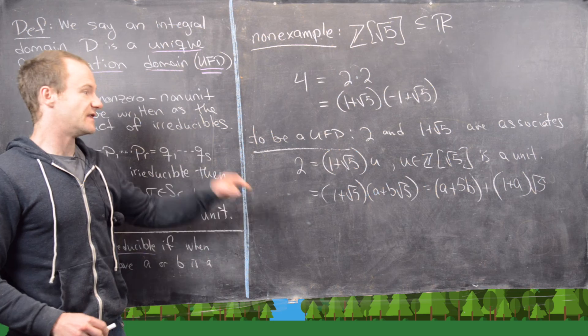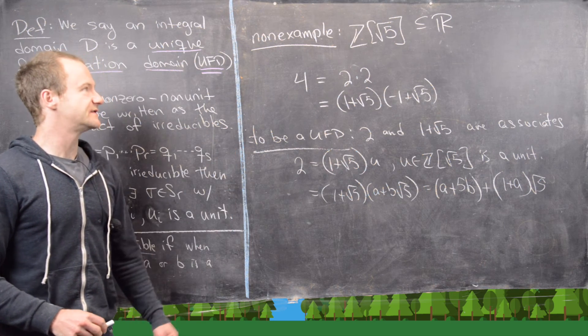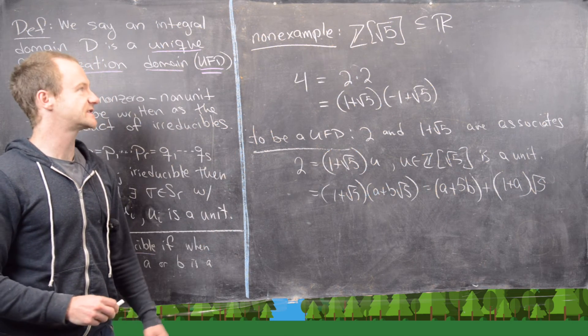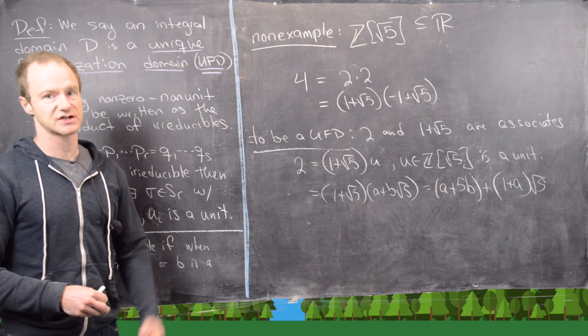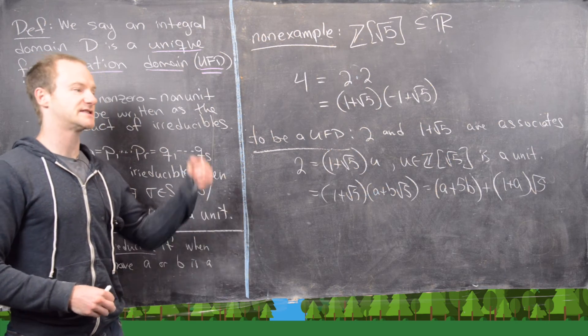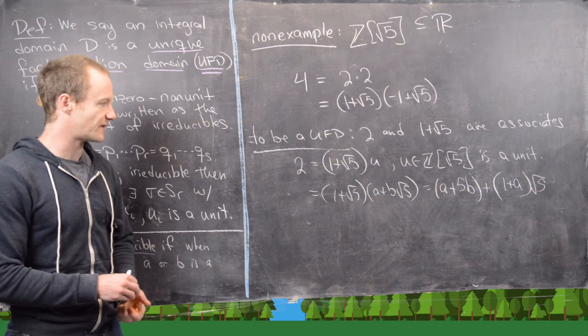Now, using the fact that all of this lives inside of the vector space, Q adjoin root 5, and Q adjoin root 5 as a vector space has a basis of 1 and a basis of root 5.